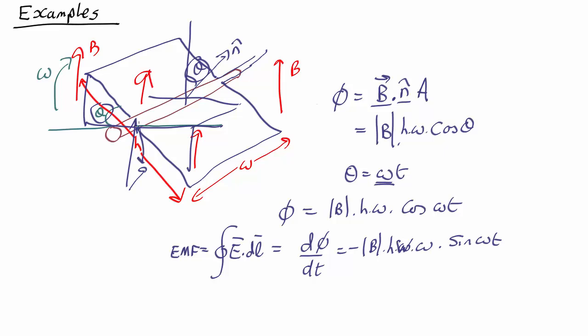So you're going to get a downward change. Therefore minus d flux by dt is upwards from the right hand rule. That means you're going to get the electromotive force, hence the current going this way around the loop.